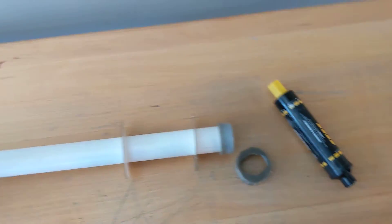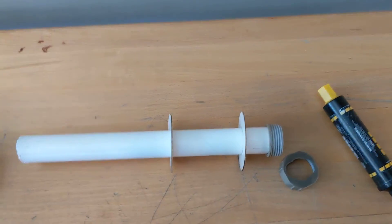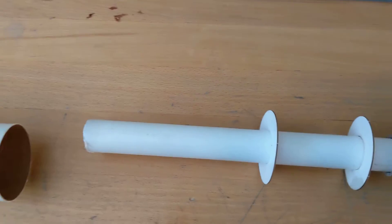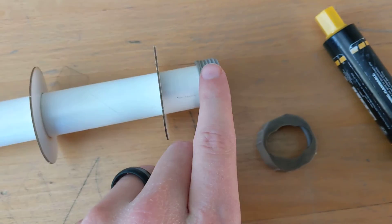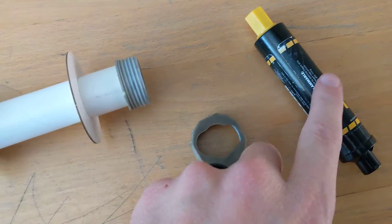Alright everyone, it is motor placement tutorial time. So we have our body tube, our motor tube, centering rings, the motor retainer, and the motor.